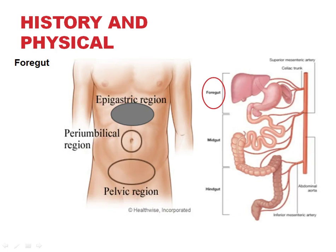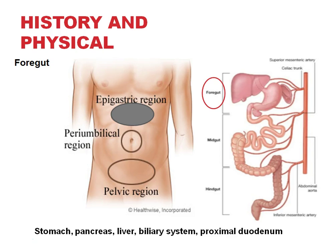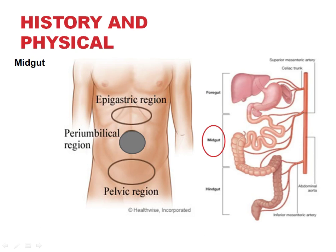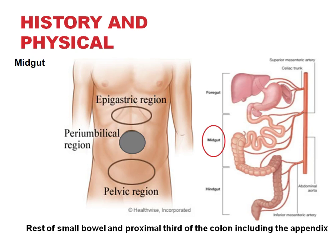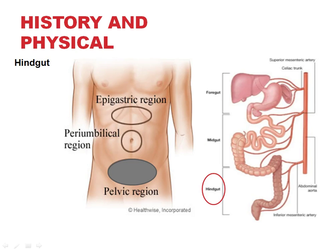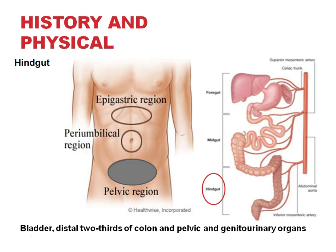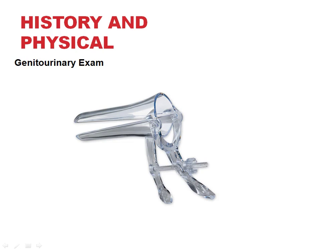Foregut organs lead to pain in the epigastric region. Midgut organs localize to the periumbilical region — this includes the appendix, which is why in appendicitis you classically get vague periumbilical pain. Hindgut organs cause pain localized to the pelvic region. Don't forget to include a GU exam when necessary, as testicular pathology in men can often present as lower abdominal pain.